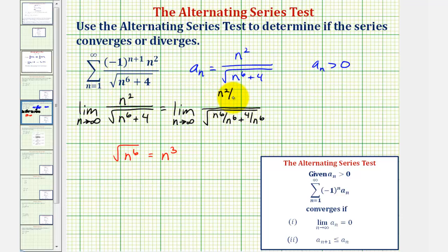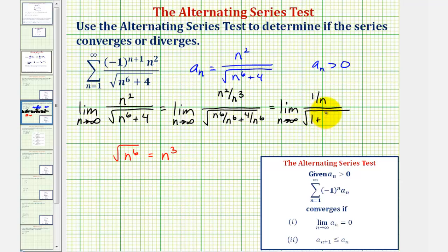So we'd have n squared divided by n to the third. Simplifying, we'd have the limit as n approaches infinity where the numerator would be one divided by n, and the denominator would be the square root of one plus four divided by n to the sixth. As n approaches infinity, the numerator is approaching zero and the denominator is approaching the square root of one, or one, because the fraction four over n to the sixth approaches zero. Therefore, this approaches zero over one, and the limit is equal to zero.